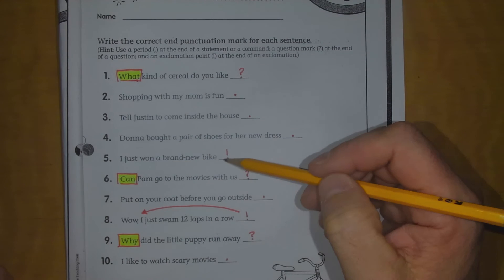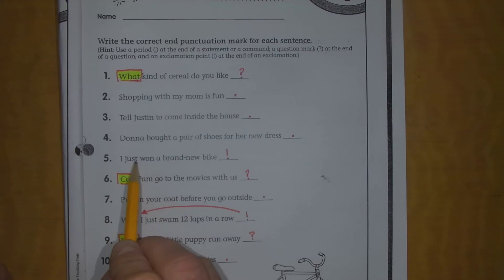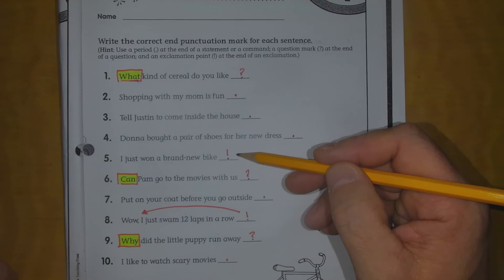I just want a brand new bike. I put an exclamation point here because people are going to be excited if they just won something and it's brand new and it's big like a bike. So I figured this was probably an exclamation.